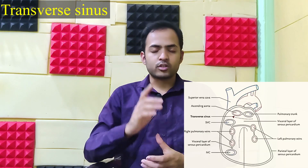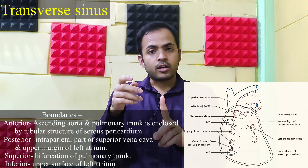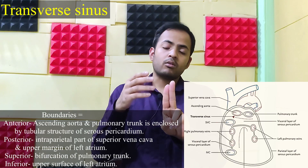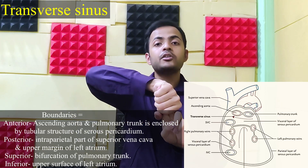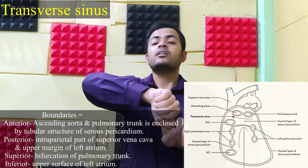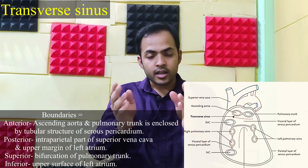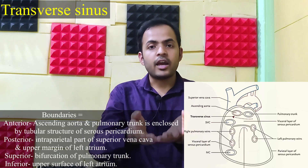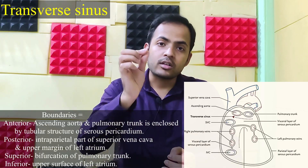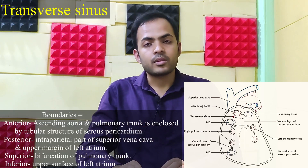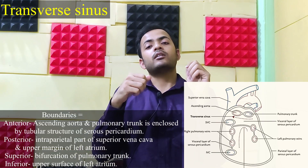Regarding the boundaries: anteriorly, you have the ascending aorta and the pulmonary trunk. These two vessels are enclosed by a tubular structure made by serous pericardium, and this entire part forms the anterior boundary of the transverse sinus, as you can see in this photo.